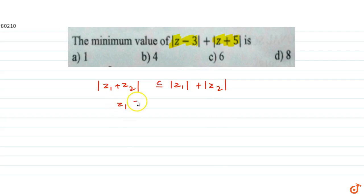So, if we let z1 as z minus 3 and z2 as minus of z plus 5, then using this inequality, we get mod of z minus 3 plus minus of z minus 5 is less than or equals to mod of z minus 3 plus mod of minus of z plus 5.